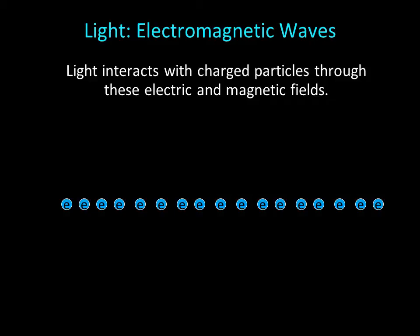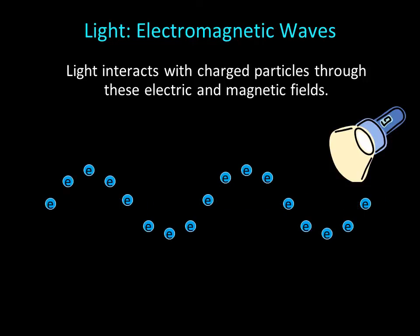For example, if we set up a row of electrons and then shine light on them, they will wiggle into a wave. The distance between the peaks in this row of electrons would tell us the wavelength of the light wave, while the number of times each electron bobbed up and down would tell us the frequency.